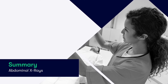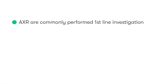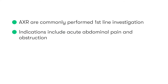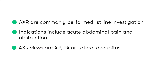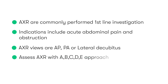To summarize what we've covered in this tutorial series on abdominal X-rays: abdominal X-rays are a very commonly used first-line investigation, with several indications including acute abdominal pain and suspicion of intestinal obstruction. In the vast majority of cases they are performed using the anteroposterior view, though posterior-anterior and lateral decubitus views are used in rare instances. When analyzing and interpreting abdominal X-rays, it's important to apply a systematic approach such as the ABCDE method. Don't worry if you find abdominal X-rays confusing at first — the more you practice and use this systematic approach, the easier it becomes and the more confident you'll feel.